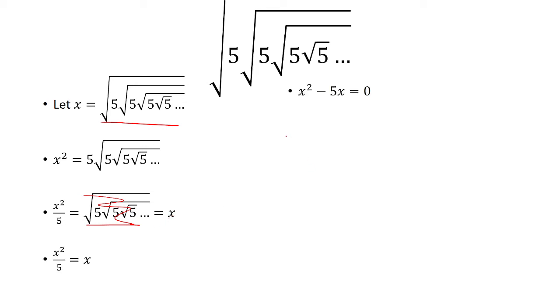Multiplying both sides by 5, we have x squared equals 5x, which is the same as x squared minus 5x equals 0.